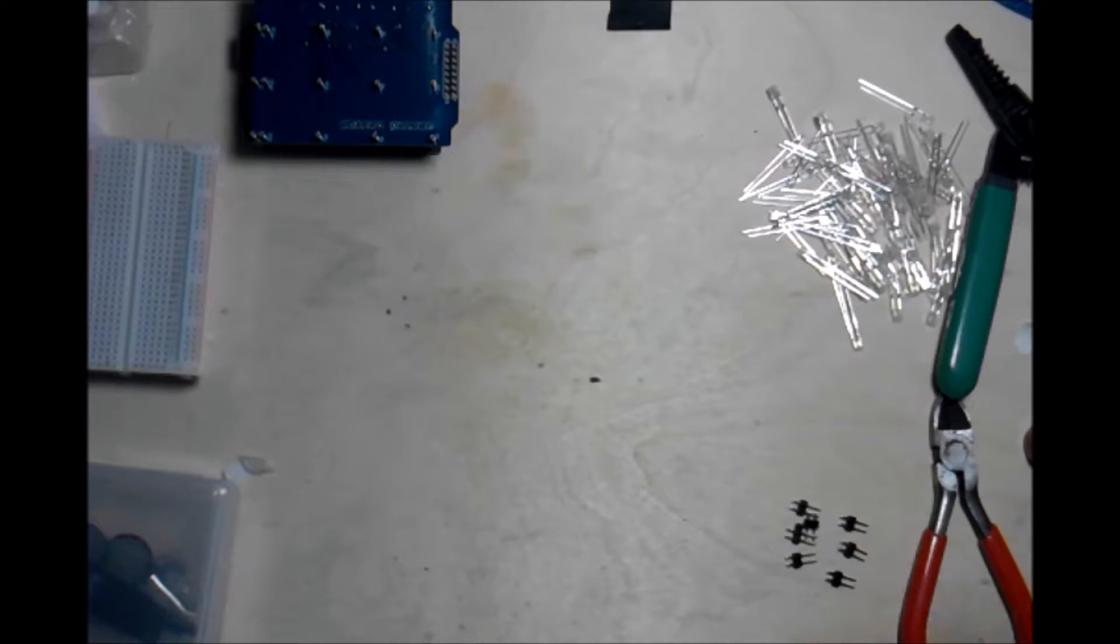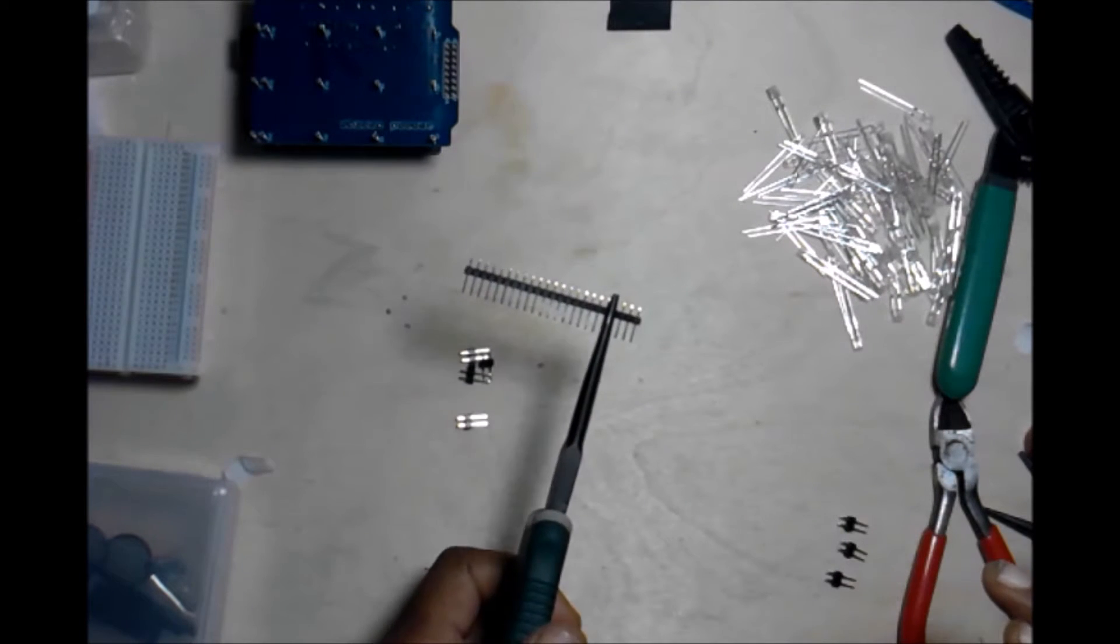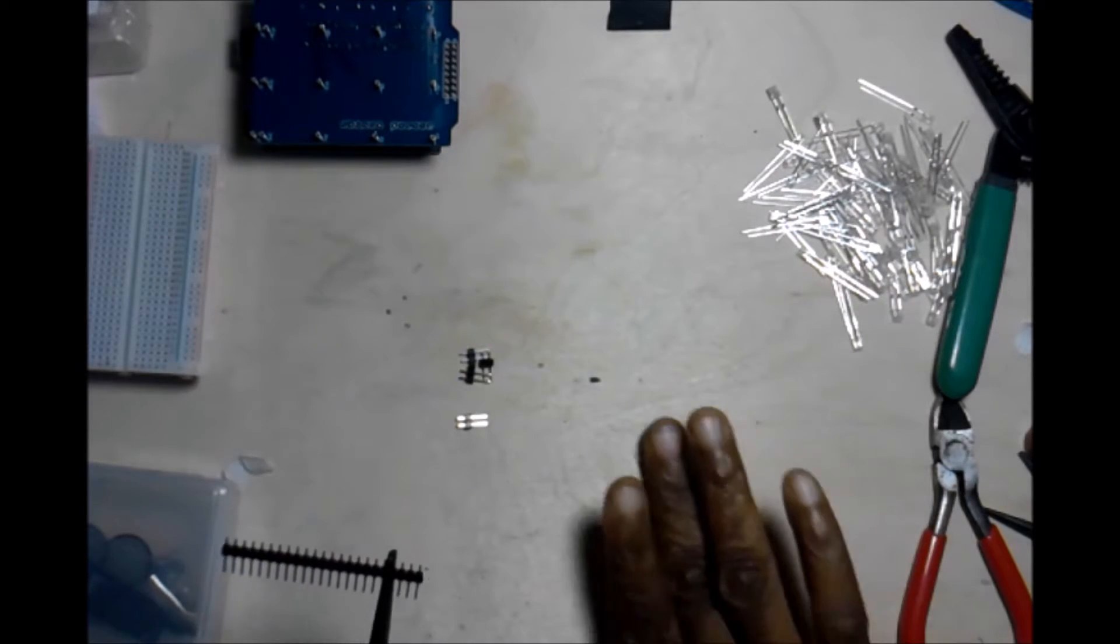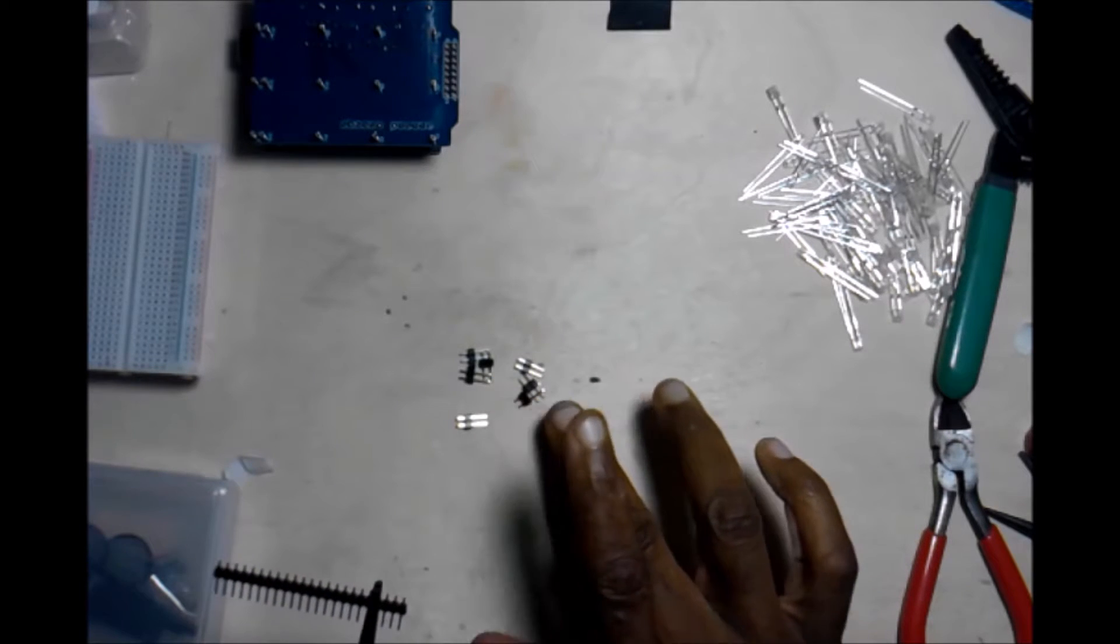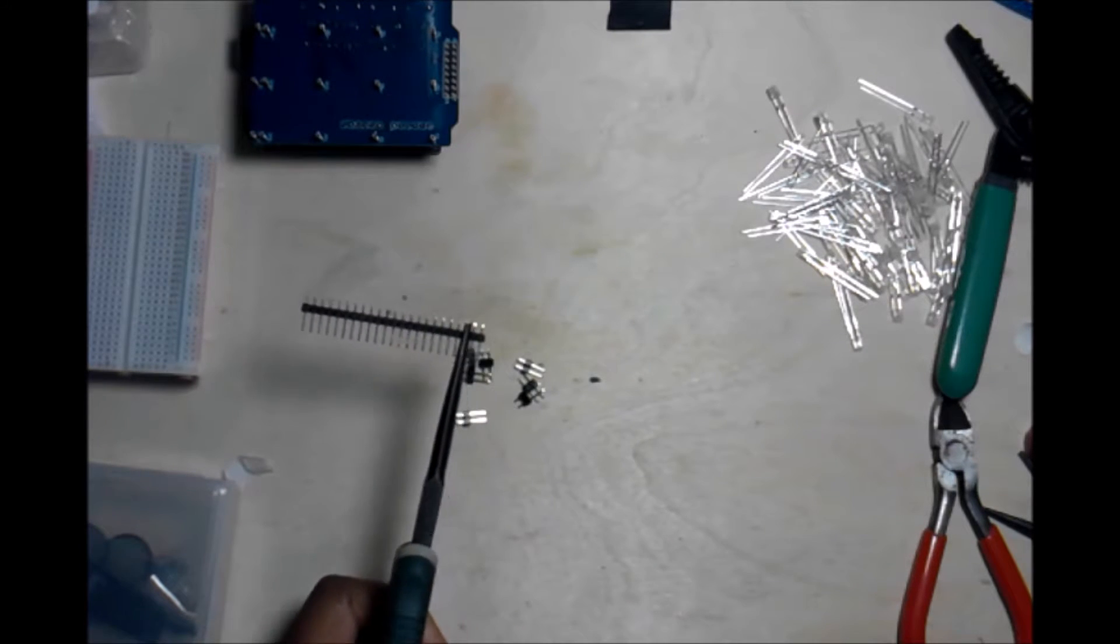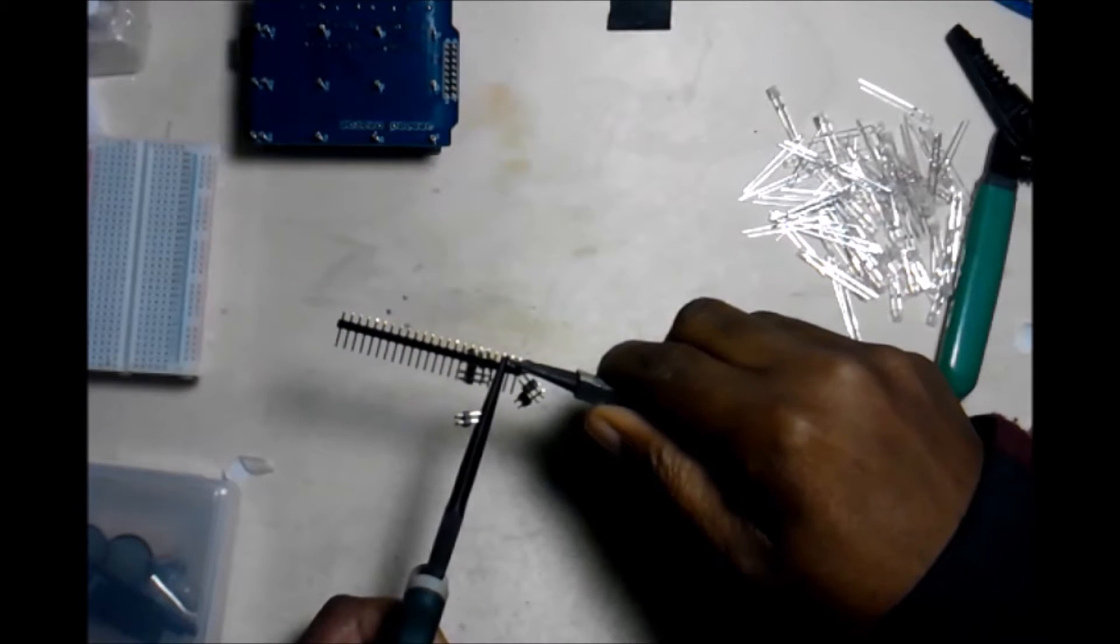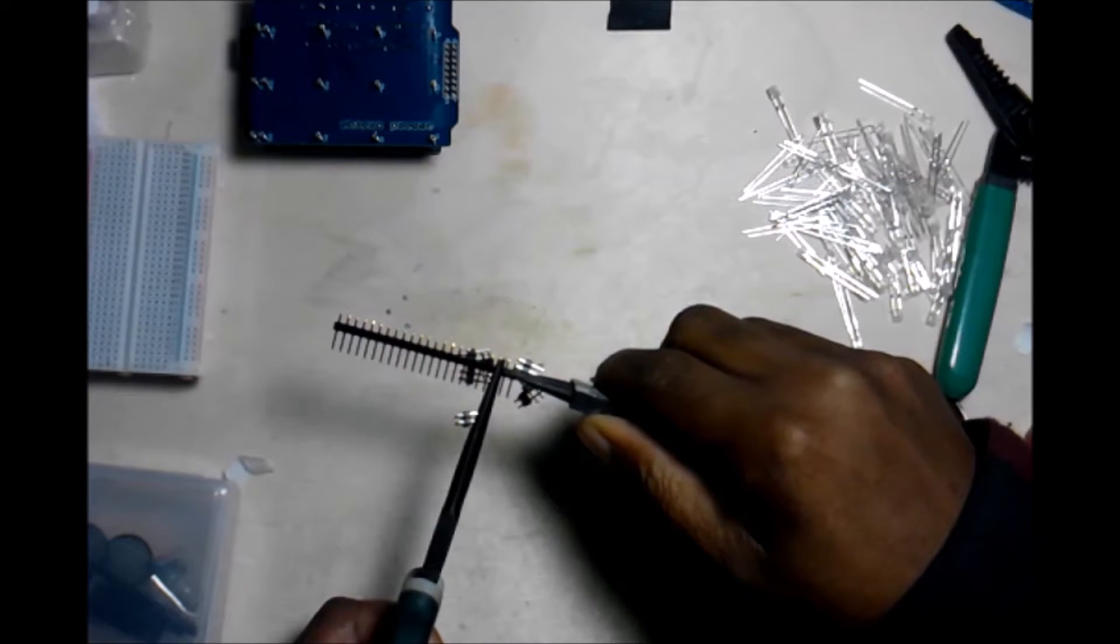Now, we're on to the next part where we're actually preparing these headers. So, we have the first row here. We have three of the second row. We need 16. So, we're taking our pliers and breaking them off carefully.